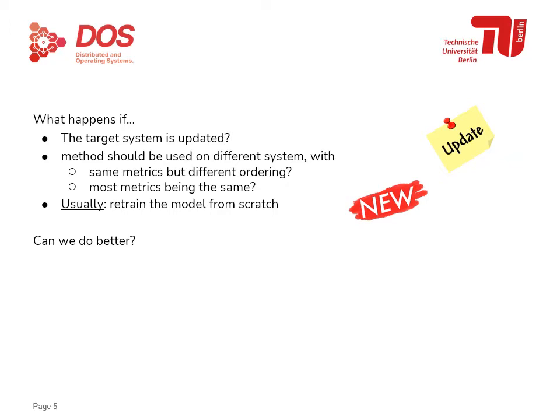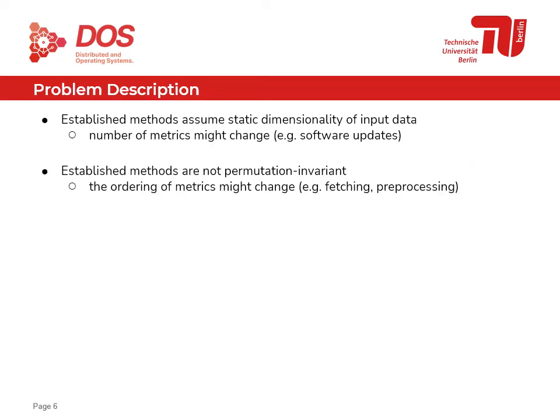The previously mentioned problems can be described with two aspects. First, many established methods assume a static dimensionality of the input data; however, the number of metrics might change in the context of AIOps, for instance due to software updates or hardware modernization. Second, many established methods are not permutation invariant — if the ordering of incoming metrics changes, there is a problem, which can happen due to fetching, pre-processing, or any other step before the data arrives at the method.